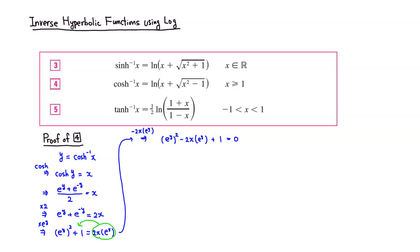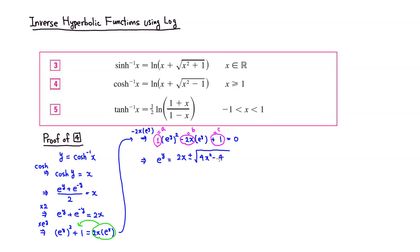This is a quadratic equation in e to the y, so we use the quadratic formula with a equals 1, b equals negative 2x, and c equals 1. By the quadratic formula, e to the y equals 2x plus or minus square root of 4x squared minus 4 times 1 times 1, all divided by 2 times 1, which is just 2.